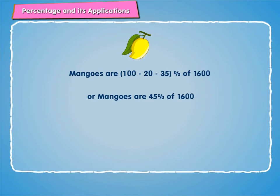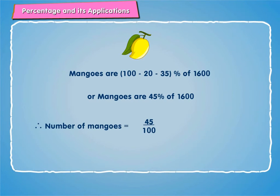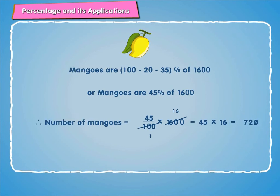Therefore, number of mangoes is equal to 45 by 100 into 1600, which is equal to 720.